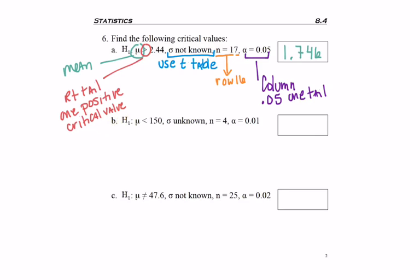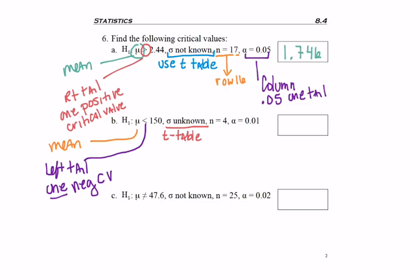Next example. Again, we're solving a problem about a mean. This is a left tail test, so we will only have one negative critical value. Sigma unknown, so again we're using the t table. Not known, unknown, it all means the same thing.